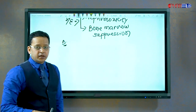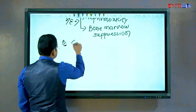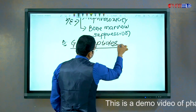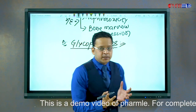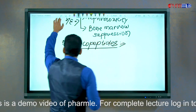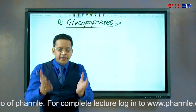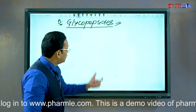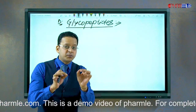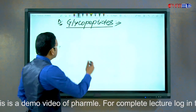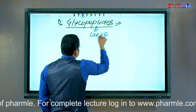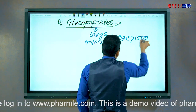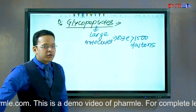Finally we come to the last drug class, called glycopeptides. Looking at this class, what comes to mind? These are peptides, and peptides are large molecules. So glycopeptides are large molecules with a size more than 1500 daltons.